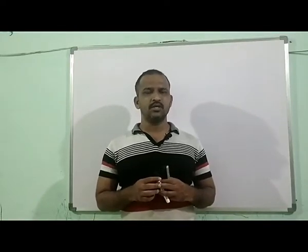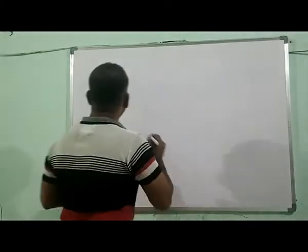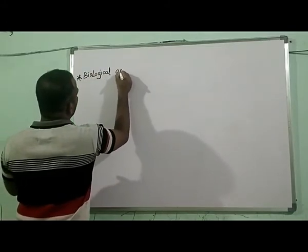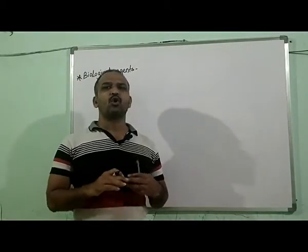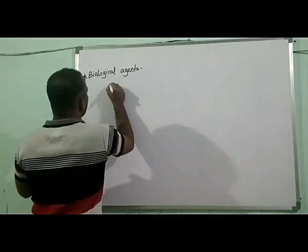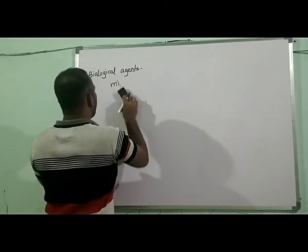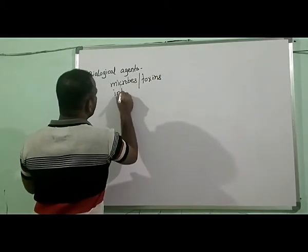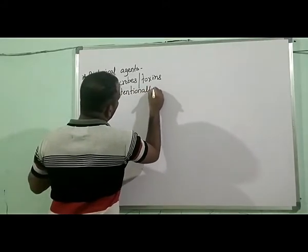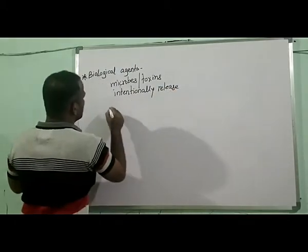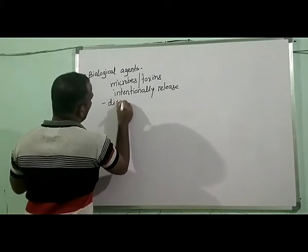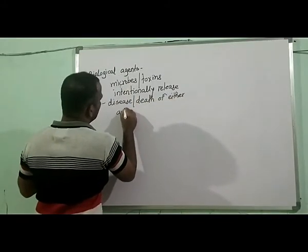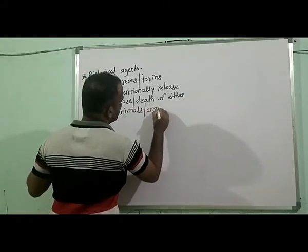Hello friends, today we are going to discuss the biological agents of warfighting. These biological agents are either microorganisms or toxins that are intentionally released. The purpose of this intentional release is to cause either disease or death of domesticated animals, agricultural crops, or humans.